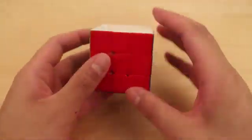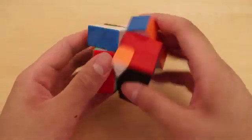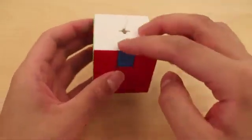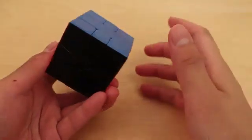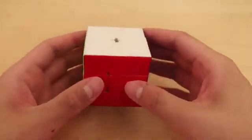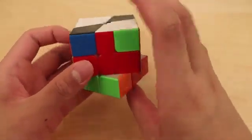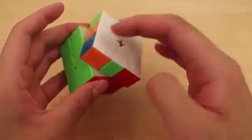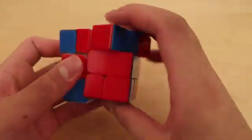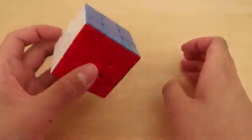Also, for Z-perms, for the edges, you can do something like this. M2U'M2U'M2. That's like a Z-perm right there. With the corner M2, you can solve the E-perm like this. So M2U'M2U'M2U'M2. And that solves this E-perm. Just like that. Pretty simple.